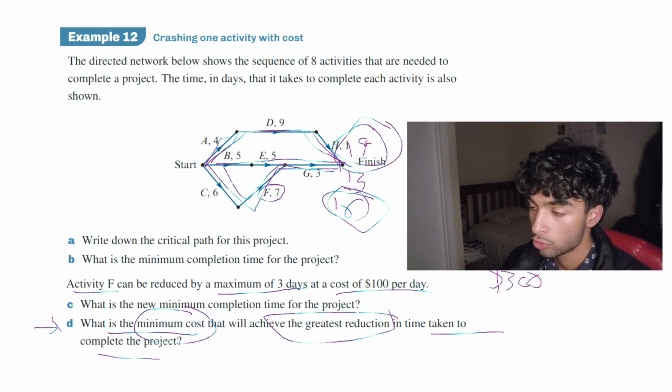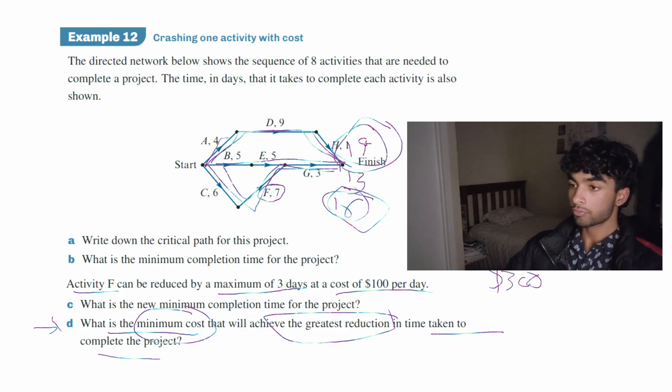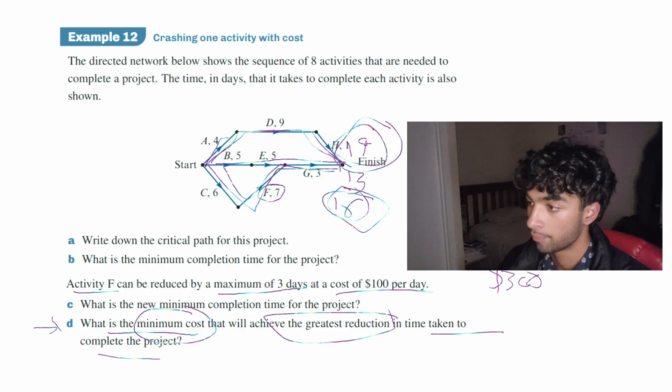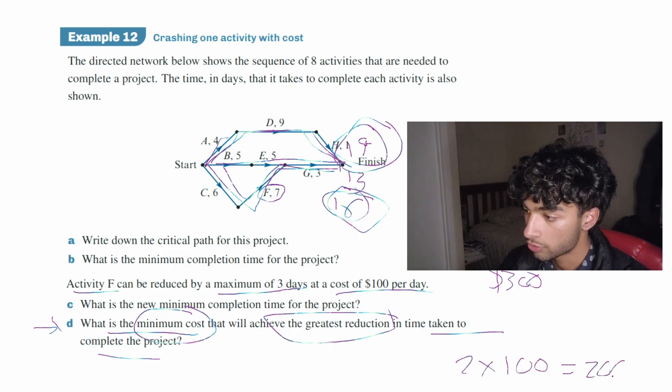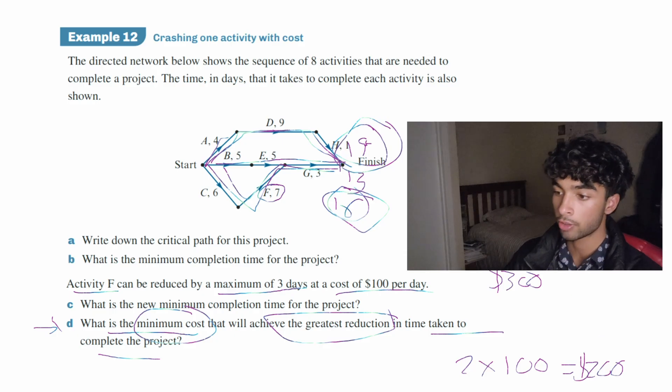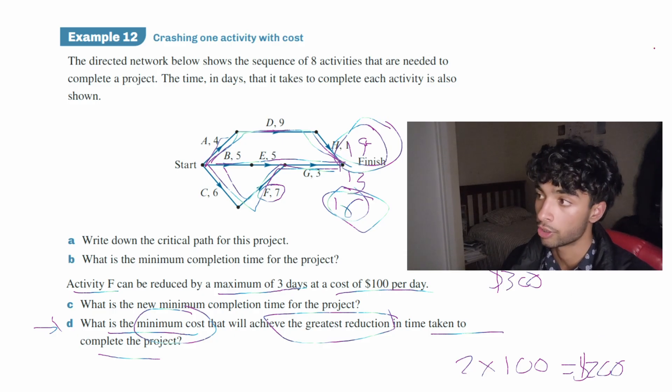So if we do two times, it will be 16 minus 2 which equals 14 and that is the maximum reduction that we could ever have. So therefore, F can be reduced twice for two days. So two times $100 equals $200. So that means the minimum cost is $200 to achieve the greatest reduction in time taken to complete the project.